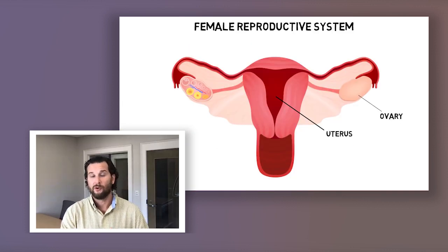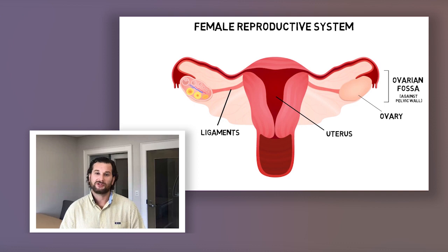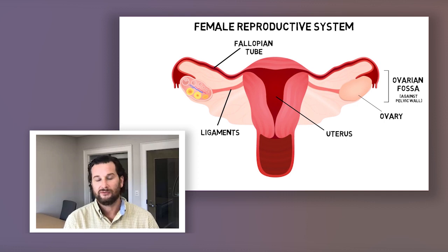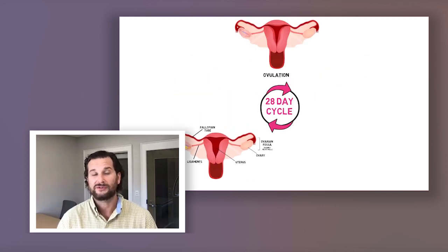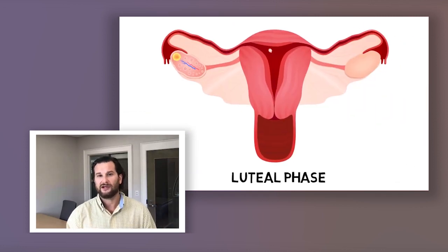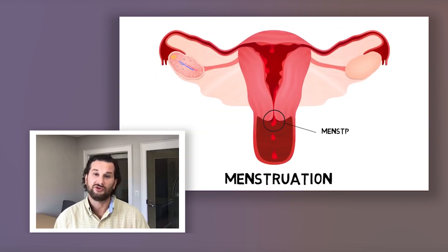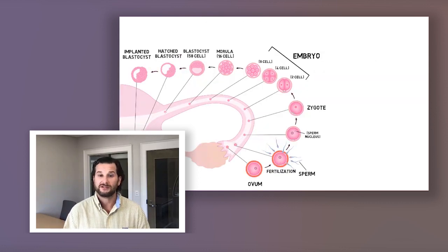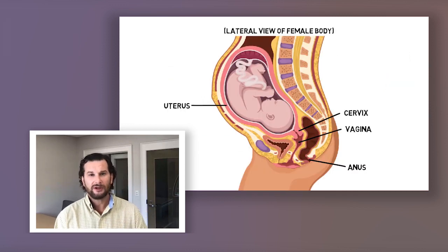Know the male and female reproductive systems. While physiology is primarily what you'll see, you do need to know the anatomy — be able to identify different parts in a diagram or illustration. The KNAT tutor online course has really detailed color illustrations and diagrams. Know how reproduction works and things about the fetus: the umbilical cord, the placenta, and the amniotic sac.